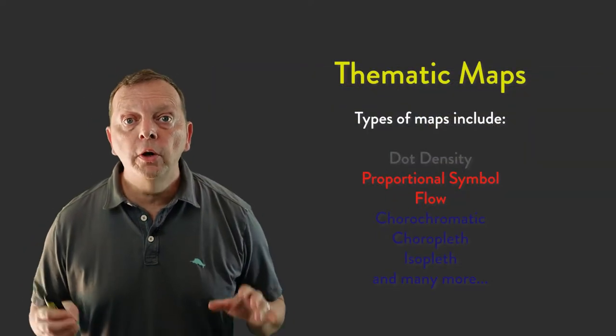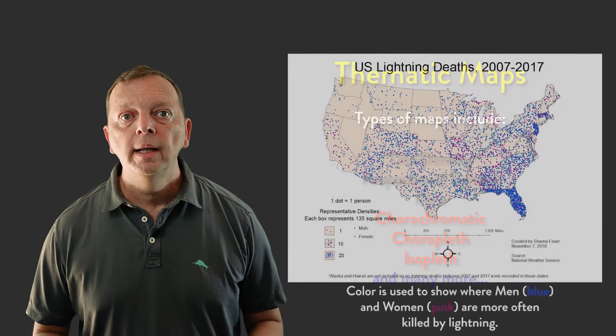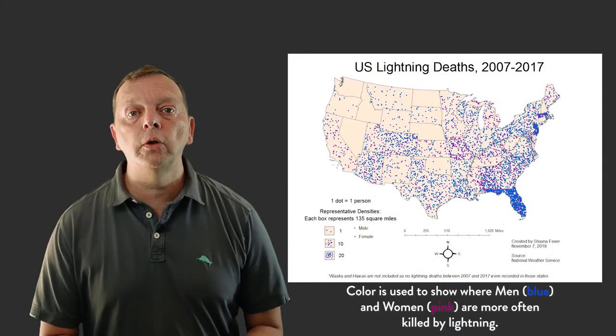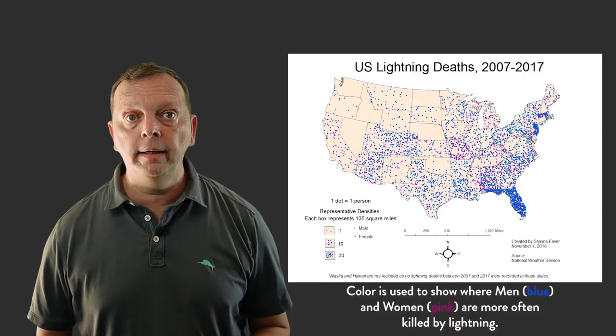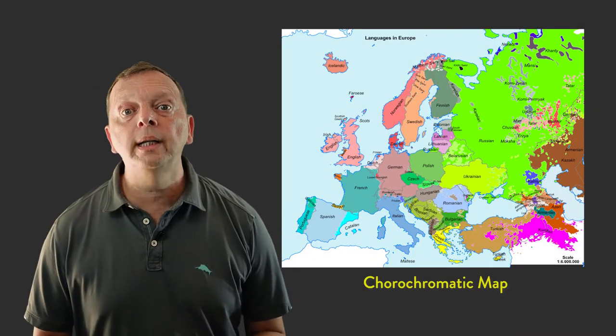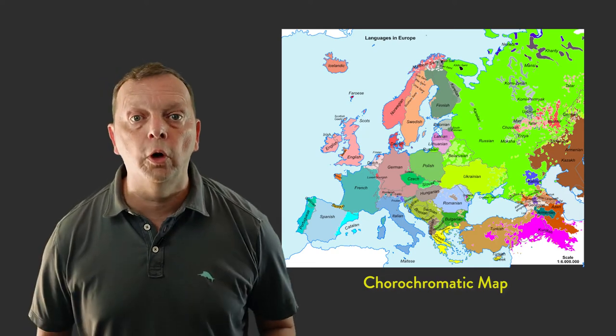Beyond dots and lines, there is the use of color in thematic maps to provide information. Let's look at the dot density map again, and we can see that it uses colors to show the number of men and women that die by lightning. But in addition to changing the color of the symbols, we could add color to the areas themselves. For example, this map shows the languages that are spoken in Europe. And very quickly, you can see where people in Europe speak English, German, French, and the other European languages.